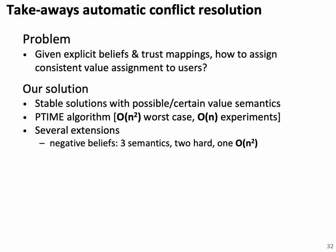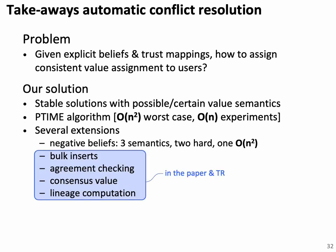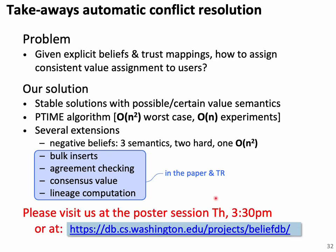In conclusion, our research was motivated by how to define a consistent semantics for the conflict resolution problem. We defined a principled semantics based on stable model semantics, and interestingly found a PTIME algorithm for this problem despite existing state-of-the-art logic program solvers requiring exponential time. We proposed several extensions including negative beliefs and constraints, defining three semantics — two of which are NP-hard and one remains in PTIME on graphs with cycles. The paper and report also cover how to deal with bulk inserts, checking whether two users agree in at least one stable model, finding consensus values, and computing lineage. Please visit our project webpage for the paper, report, and slides. Thank you.